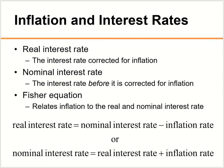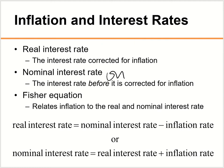You also need to know the Fisher equation, which shows the relationship between the real interest rate, the nominal interest rate, and inflation. The nominal interest rate is how much the bank pays you on paper. The real interest rate is your true profit — think of it as your actual purchasing power gain. The formula is: Real Interest Rate = Nominal Interest Rate − Inflation.